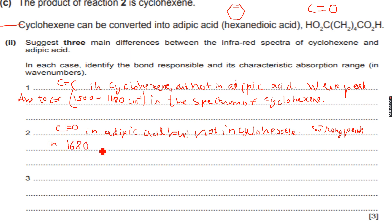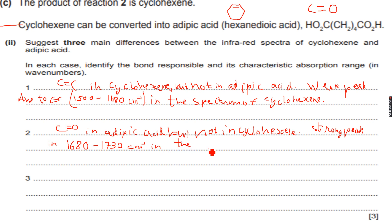The C=O group has different wavenumber ranges for different compounds. For carboxylic acids, the C=O absorption range is 1680 to 1730 cm⁻¹, and this peak appears in the spectrum of adipic acid. Additionally, because adipic acid also has the OH group of carboxylic acids, the OH group of carboxylic acids will also be present in adipic acid.